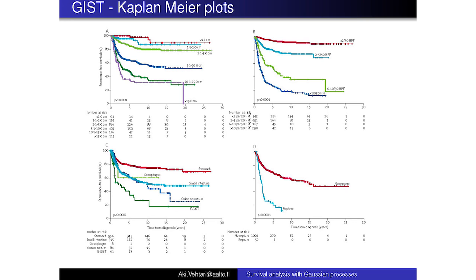You can see here the Kaplan-Meier plots. In each plot there are different colored curves. They start from 100% survived, and then the percentage drops depending on the group. The different colors correspond to different groups, and the probability of survival drops over time.